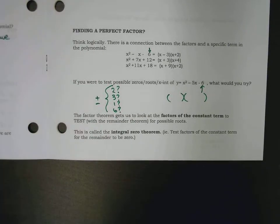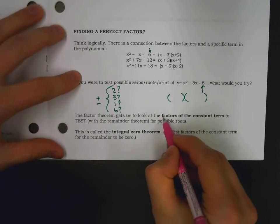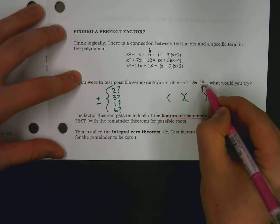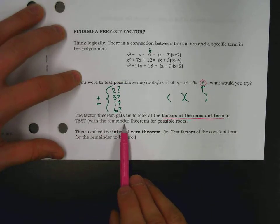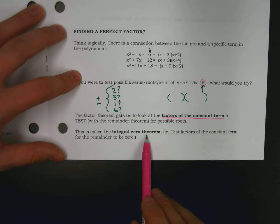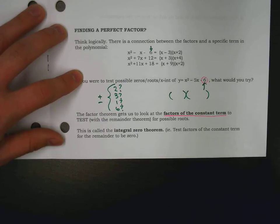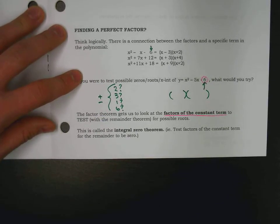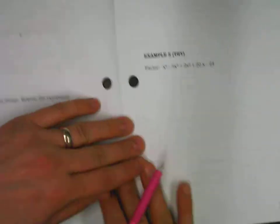So, the idea here is that we're going to be looking at factors of the constant term. Factors of the constant term to test with the remainder theorem for possible roots. This is called the integral zero theorem, which really is just saying test factors of the constant term for the remainder to be zero. And if we get the remainder to be zero, awesome. Then we've got factors.